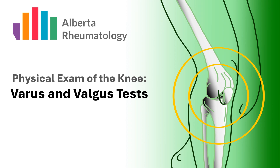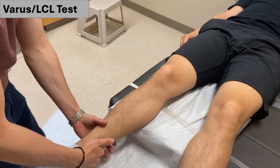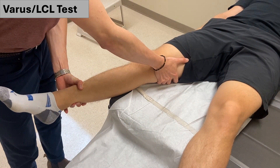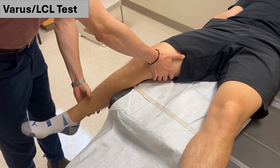Varus and valgus testing seeks to determine the integrity or laxity of the lateral collateral ligament (LCL) and the medial collateral ligament (MCL) respectively. Begin with the patient in supine on the examination bed. For both varus and valgus testing, be sure to test the knee both at full extension and at 30 degrees of flexion, ensuring to provide support to the thigh and knee either with a pillow or by hanging the patient's leg partially off the bed. To test the LCL using varus forces, with one hand stabilize the medial aspect of the patient's thigh just proximal to the knee, and with the other hand apply gentle but firm inward force to the lateral aspect of the patient's lower leg just proximal to the ankle, applying a counter force with your first hand to produce a varus stress.